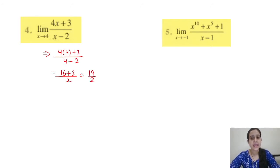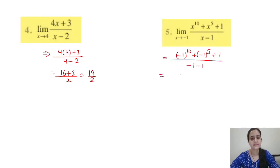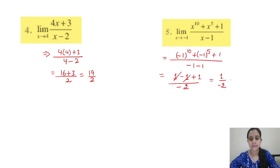Question 5: limit x tends to −1. Putting x = −1, the denominator gives −1 − 1 = −2, so no problem. Now (−1)^10 = 1 (even power is positive) and (−1)^5 = −1 (odd power). So the expression becomes (1 − 1 + 1)/(−2) = 1/(−2). The answer is −1/2.